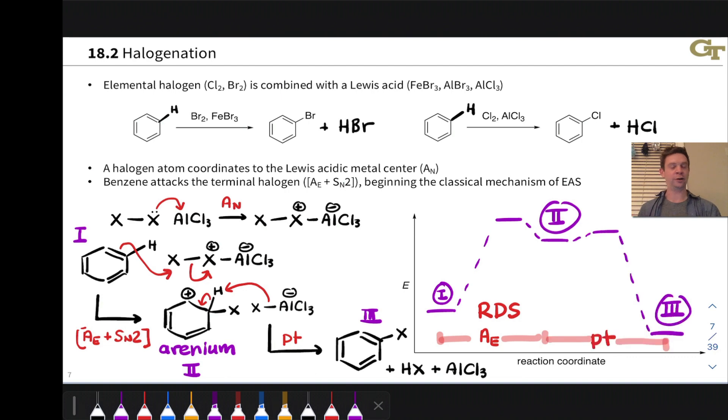Because this second step restores aromaticity, it's way, way, way downhill. And just as in the standard prototypical mechanism we've already seen, it's the first step that destroys aromaticity and is thus rate-determining. It's this coordination of the pi electrons to X to establish the carbon-X bond that's rate-determining in this reaction.